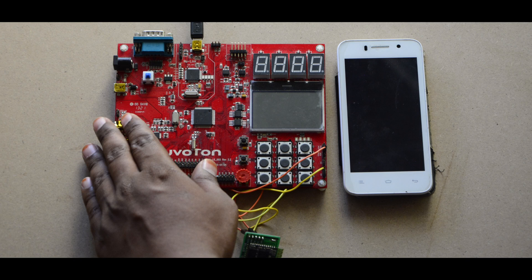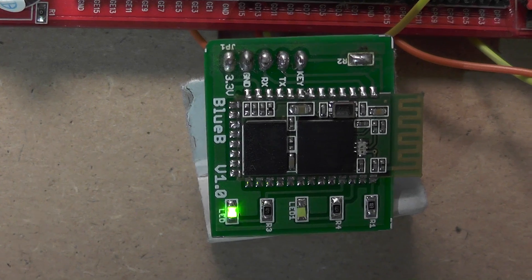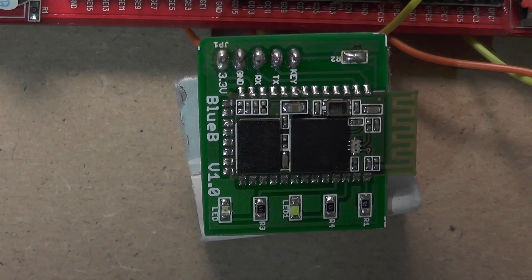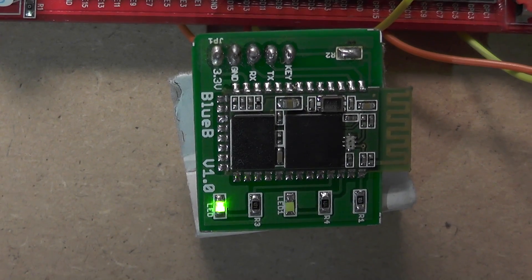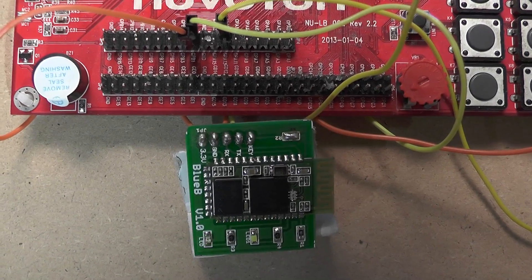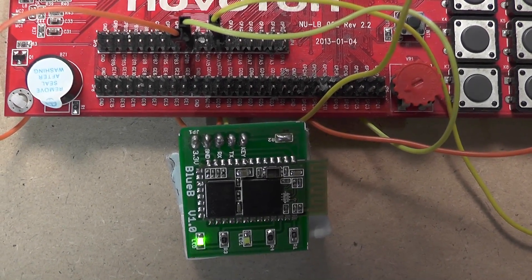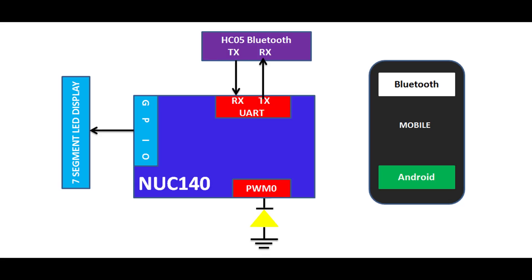This is the NUC140 learning board. This one is a USB-based HC05 Bluetooth module. It is communicating to the learning board through the Rx and TX pins. This diagram explains the on-chip resource utilizations and pin connections.